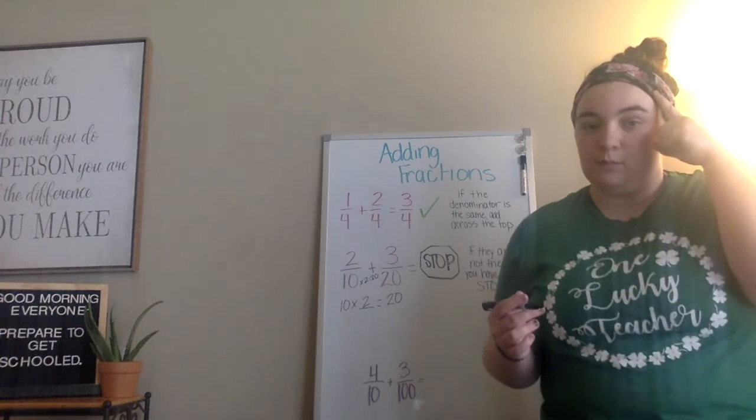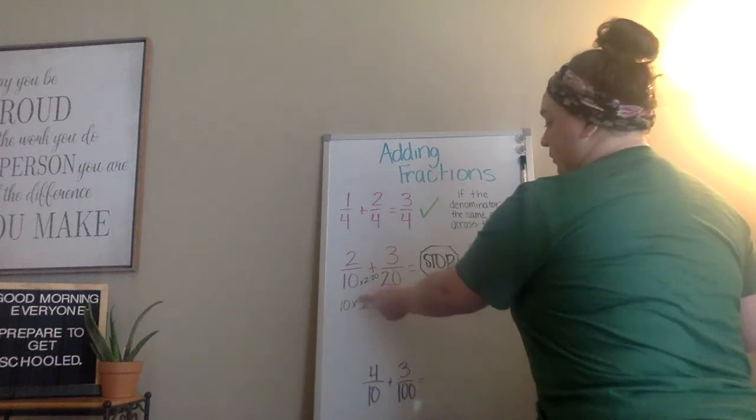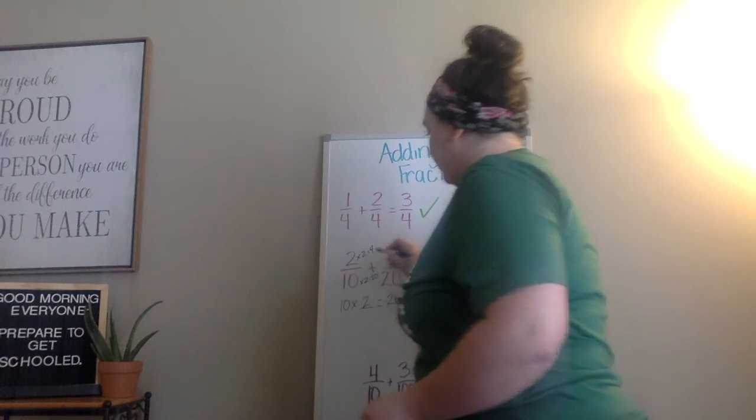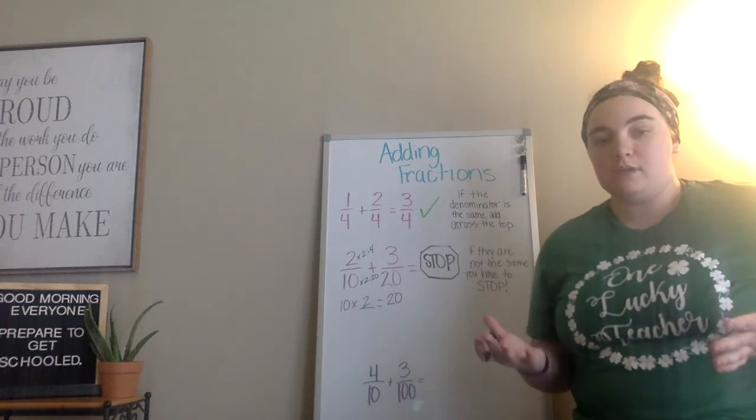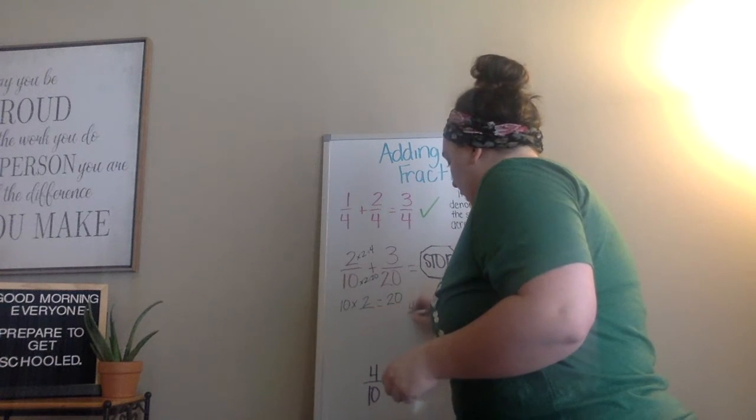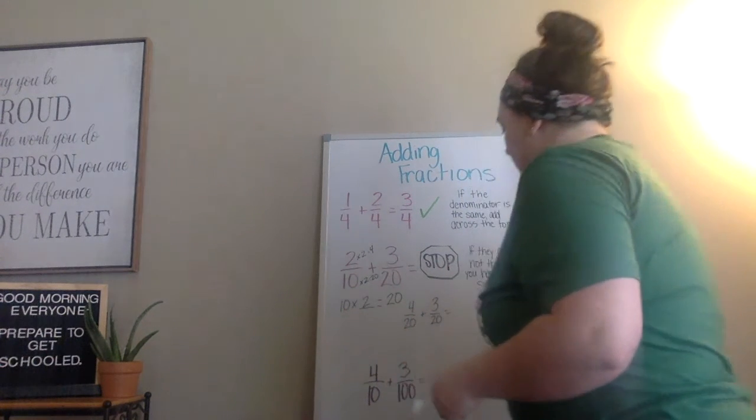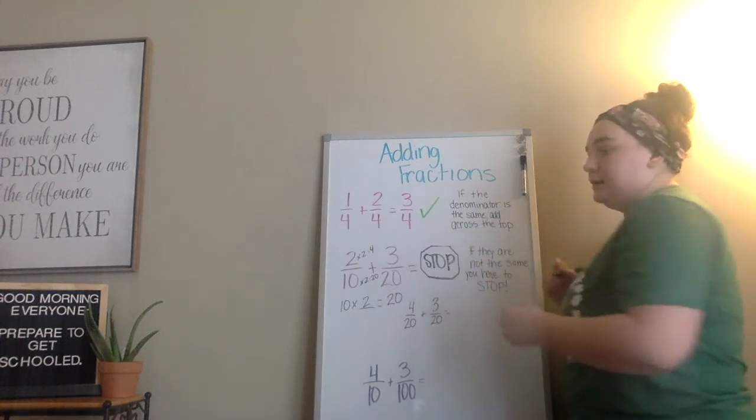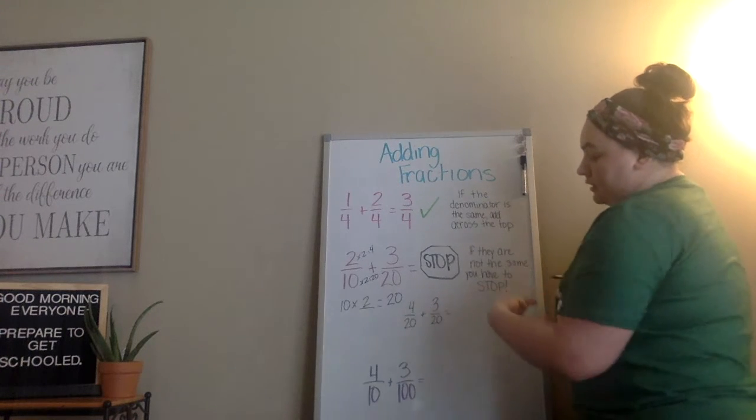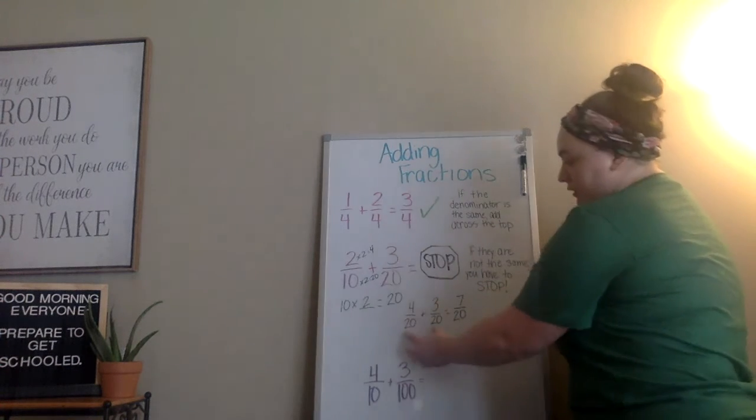But remember from last time, when I was talking about equivalent fractions, whatever I do to the bottom, I have to do to the top. So if I multiply the bottom by 2, I need to multiply the top by 2 as well. So now I have this new fraction with two common denominators that I can add together. And it should look like this. 4 twentieths plus 3 twentieths. And I learned up top that if my denominators are the same, I add across the top and I'm good to go. My denominators are now the same, so I add across the top. 4 plus 3 is 7 over 20, which was my new common denominator.